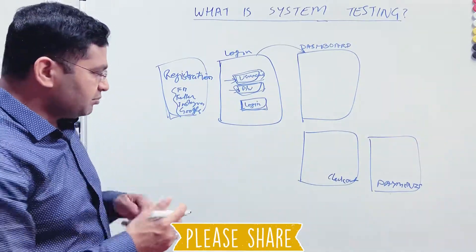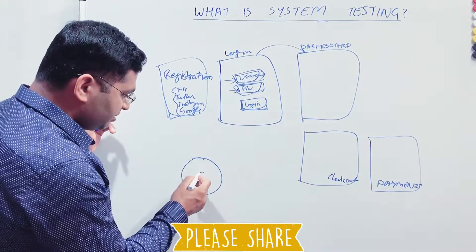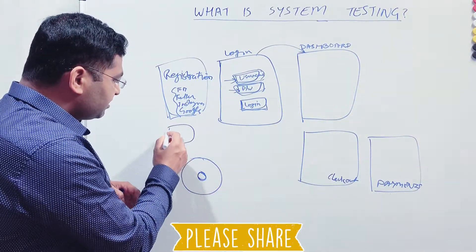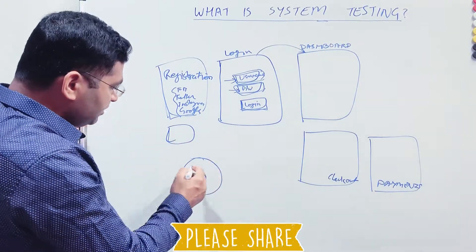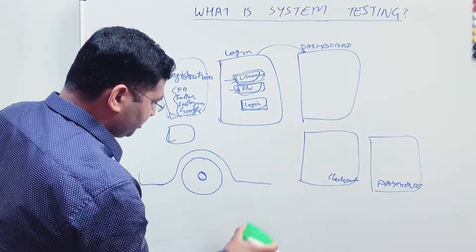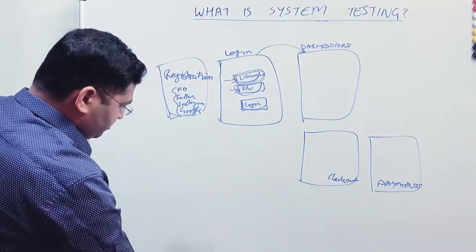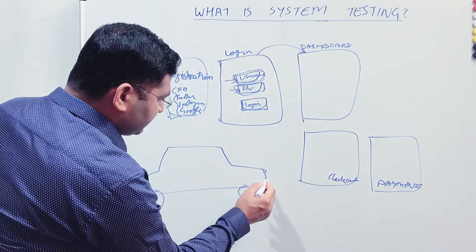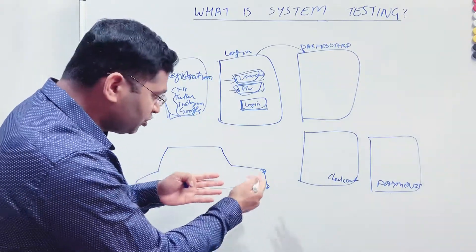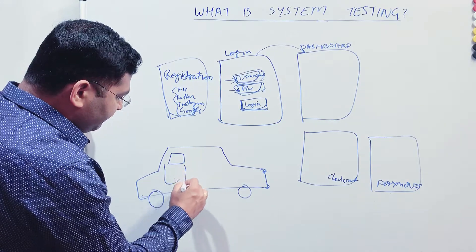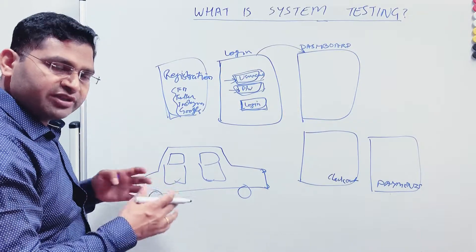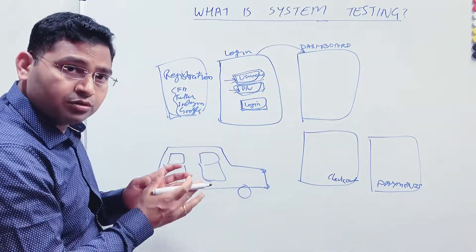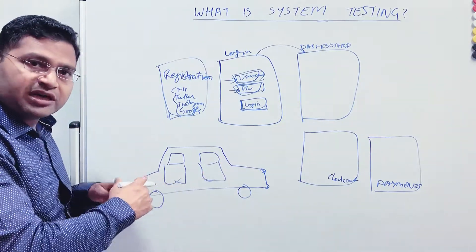Taking this back to the car example: I've tested the wheel — that's integration testing of the wheels. Then I test the integrated engine, and then there's the body. Once all of this is assembled together in the car, say this is my car body, the wheels are fitted, the headlights — these are small units, and there could be even smaller units within them. The window, the door — everything has been built and tested. Once the car is ready and needs to be tested as a whole, that is what system testing covers.